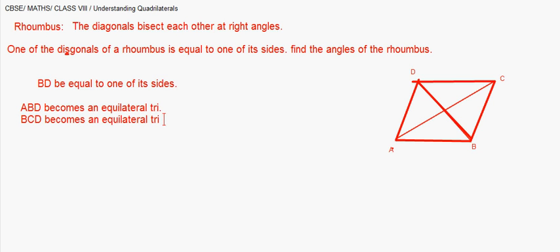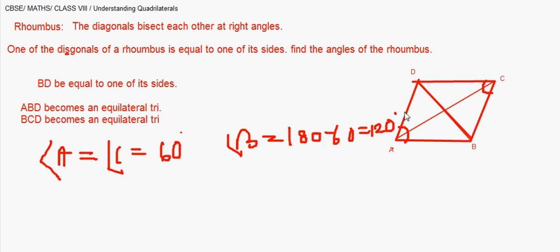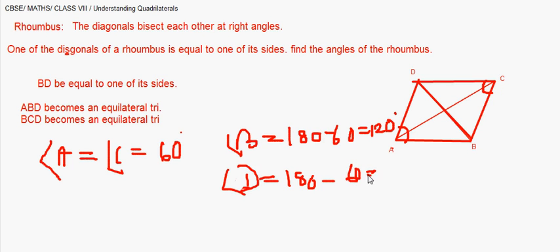This makes angle C and angle A equal to 60 degrees each, since each angle of an equilateral triangle is 60 degrees. Angles A and B are supplementary, so angle B = 180 - 60 = 120 degrees. Similarly, angles C and D are supplementary, so angle D = 180 - 60 = 120 degrees.